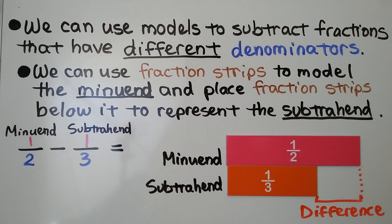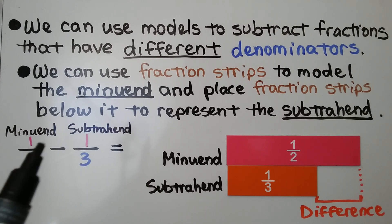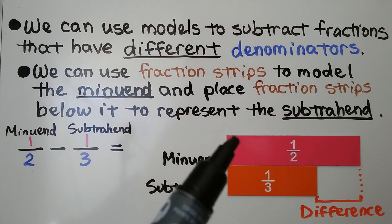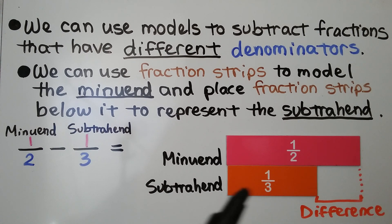We can use fraction strips to model the minuend and place fraction strips below it to represent the subtrahend. So the first number is our minuend. We're taking away the subtrahend, so we put the minuend fraction strip on top, the subtrahend one on the bottom, and we'll be able to see the difference between them.